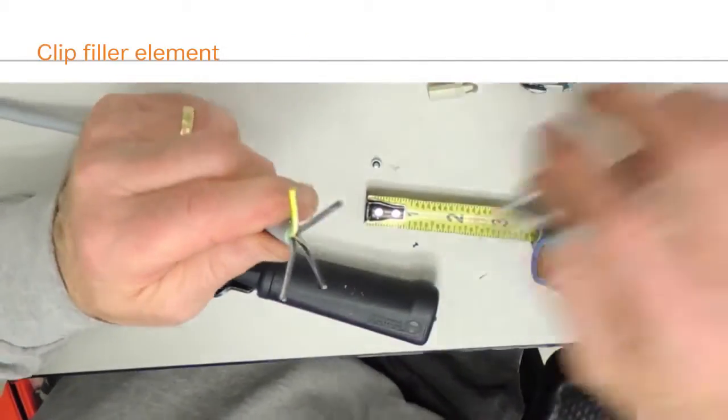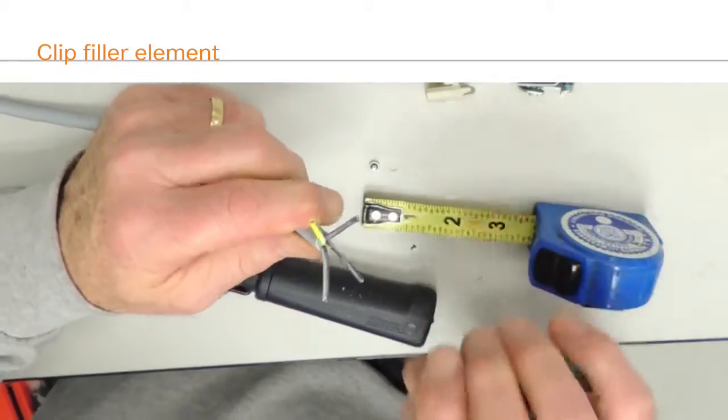Once the outer jacket is stripped, remove the filler element if there is one with wire clippers.